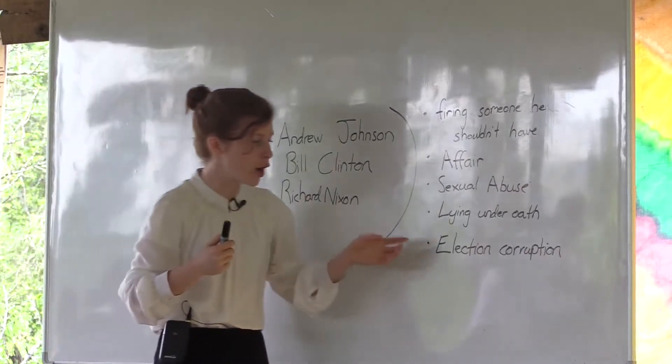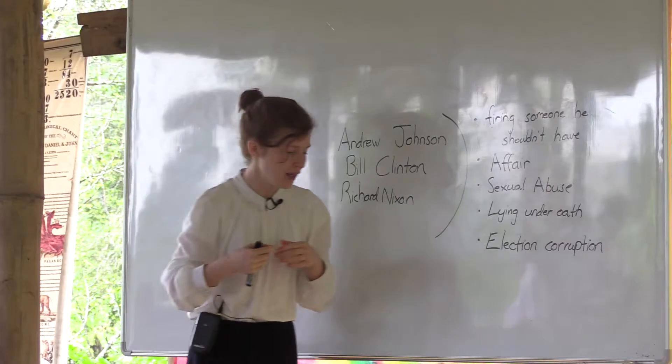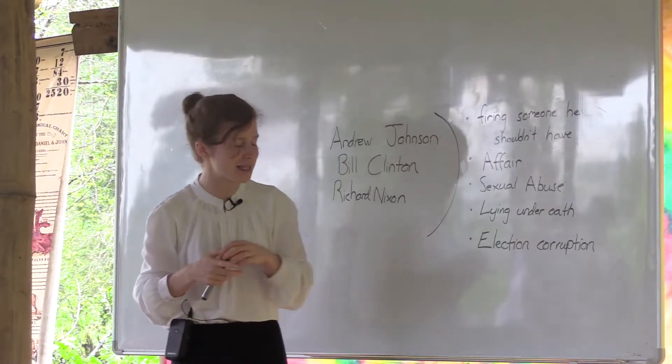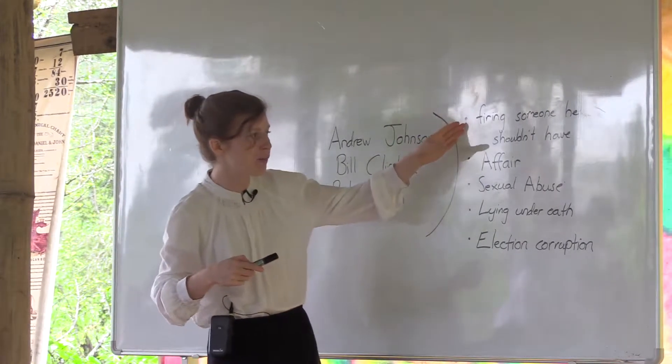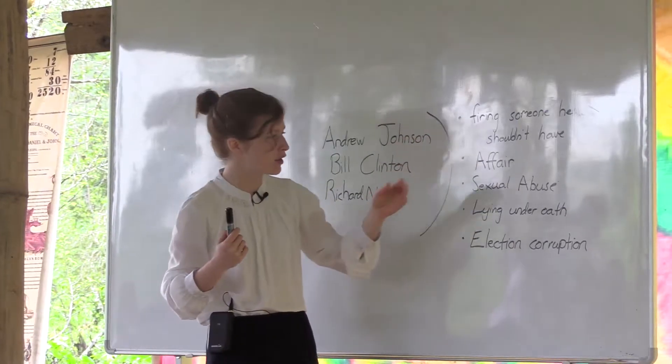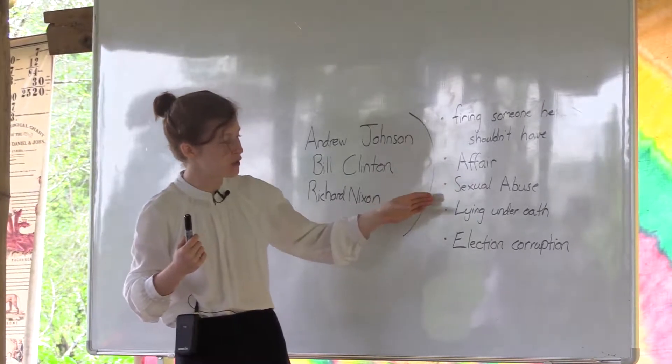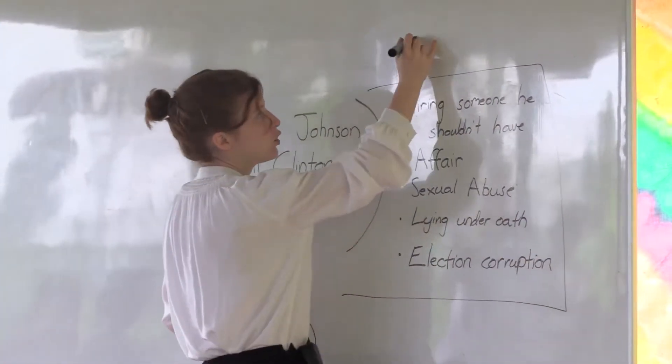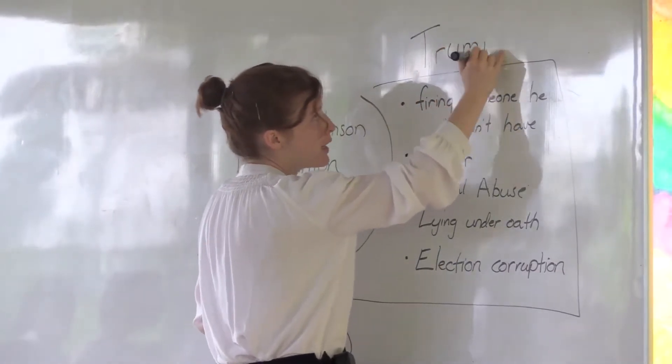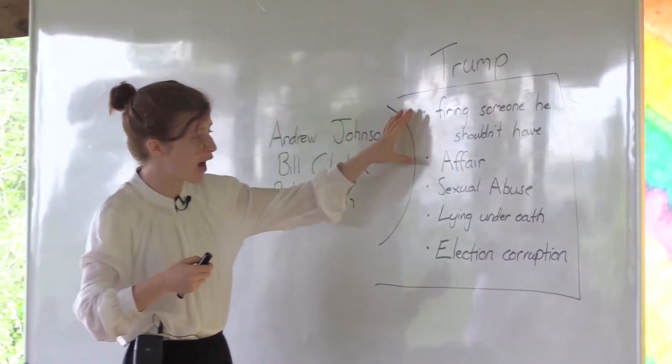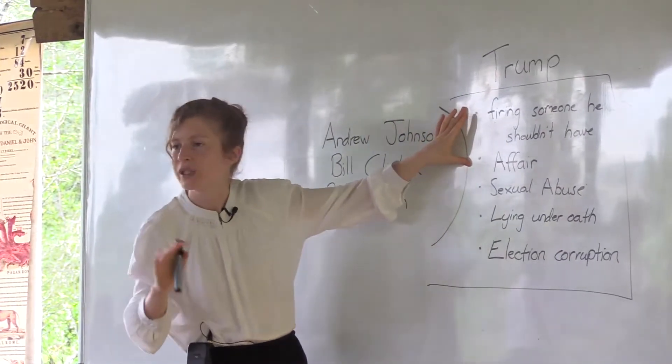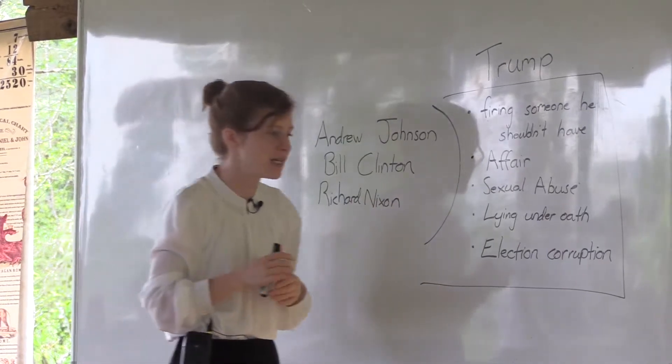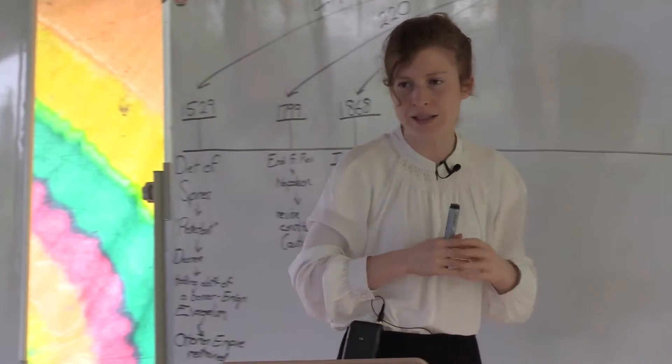What was Richard Nixon attempted to be impeached for? Election corruption. He had people loyal to him break into his enemies' buildings and wiretap them - a complicated scandal. So you have firing someone that shouldn't have been fired against the wishes of Congress, an affair, allegations of abuse, lying under oath, and corruption during a presidential election. All of these things are what Donald Trump is being investigated for. Some of them - the affair and firing someone he shouldn't have - is proven, that's not debatable. These three are under investigation, but all five are the reasons that his impeachment is being so pushed in the United States right now.